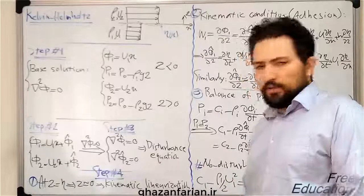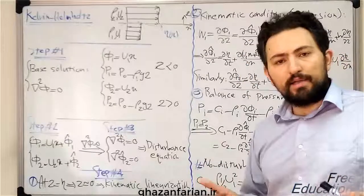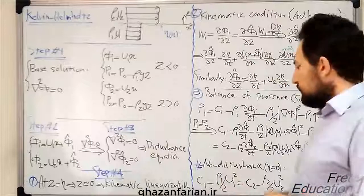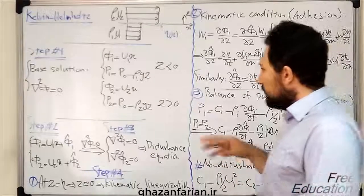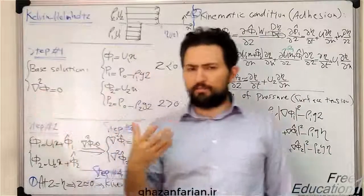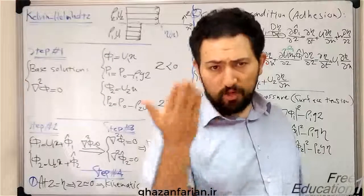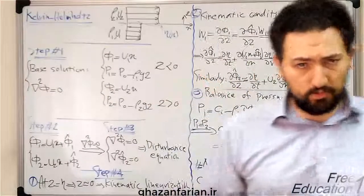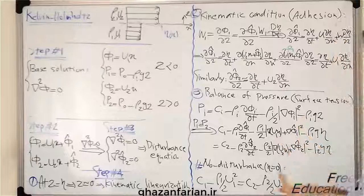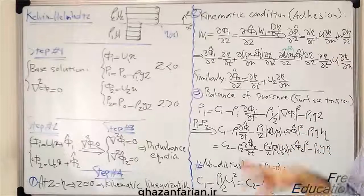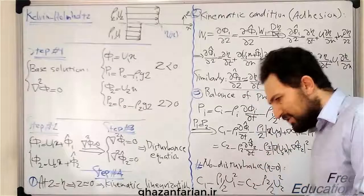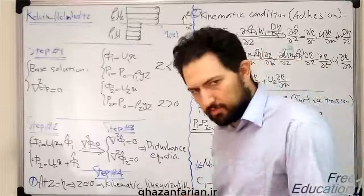The fourth step is to linearize the equation. As we know, the Laplace equation is already a linear partial differential equation, but the boundary conditions are non-linear in this case, so we need to linearize the boundary conditions.